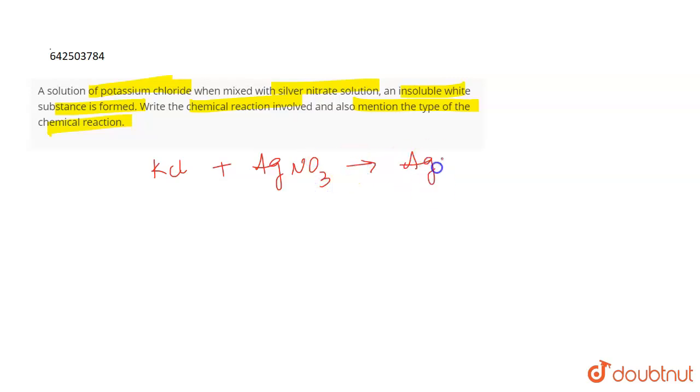It leads to the formation of AgCl, which is actually the insoluble white substance or the white precipitate, which is formed along with KNO3, which is potassium nitrate.